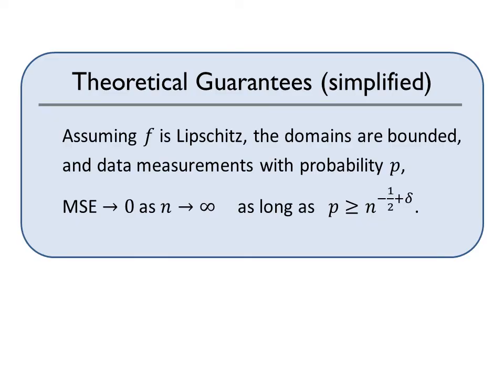We provide theoretical guarantees for our algorithm under basic regularity conditions. As long as the sample probability is greater than or equal to n to the minus one half plus delta, the mean squared error goes to zero with n, the dimension of the matrix.